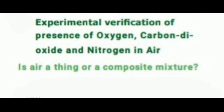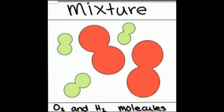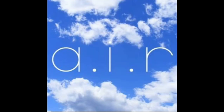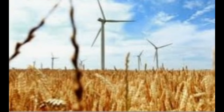Is air a single thing or a composite mixture? For a long time, until the 18th century, humans thought air was a fundamental natural element of matter. However, a classic experiment conducted by Joseph Priestley in 1774 showed that air is not an elementary substance but a composition or mixture of gases. He was also able to identify a colorless and highly reactive gas.